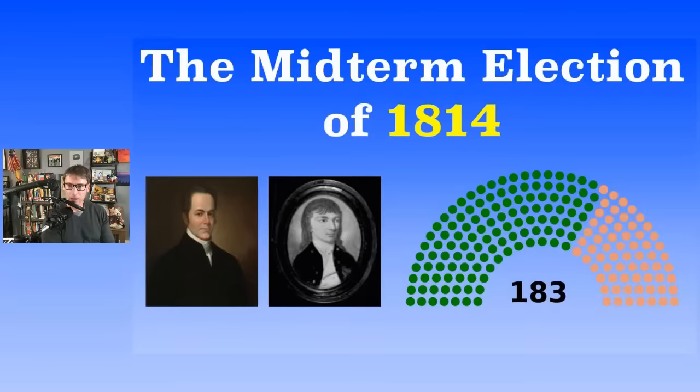In the House of Representatives, the Democratic-Republicans did gain seats. There were 182 seats total; 92 were needed for a majority. The Democratic-Republicans gained five, ending up with 119 out of 182. Federalists lost four, ending up with 64 seats.